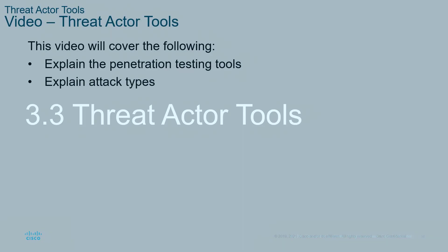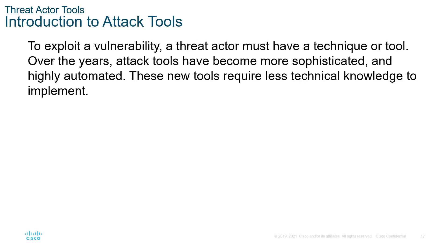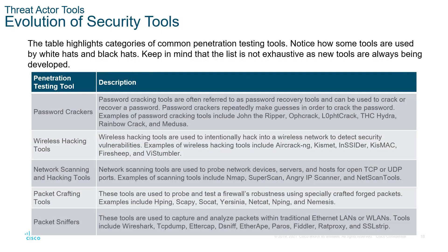Threat actor tools — in our course shell there is a video covering types of attacks and penetration tools. Common attack tools are used to exploit vulnerabilities; the attacker needs the technique, tool, or experience to do certain things. There's a specific process: reconnaissance, network scanning, password cracking requiring password cracking tools, wireless hacking requiring wireless hacking tools, and so forth. Password cracking tools include John the Ripper, L0phtCrack, THC Hydra, Rainbow Crack — they use an algorithm to repeatedly guess at passwords.